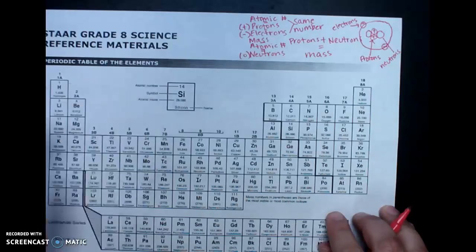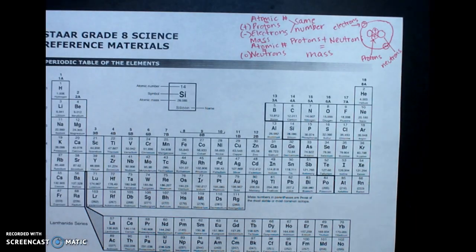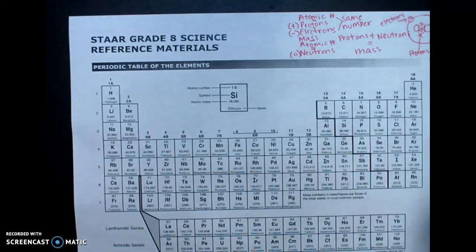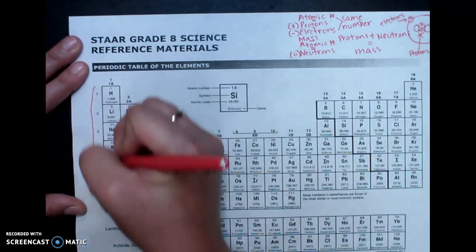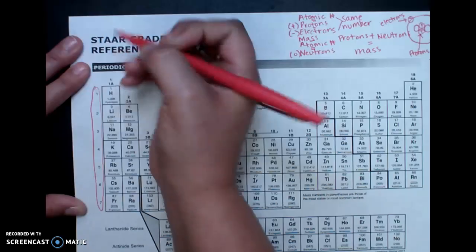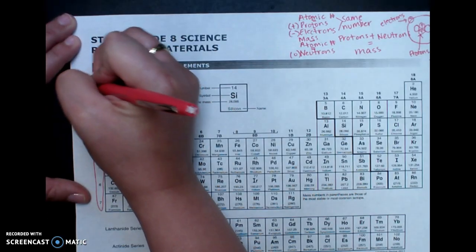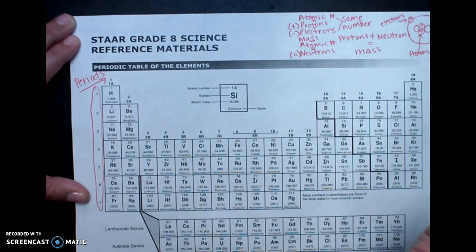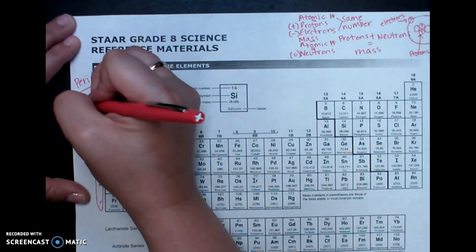Okay, moving on. Next we need to distinguish between periods and groups. So first we're going to talk about periods. So we're going to go over here to the left, and we need to remember that all of these over here, these seven, are periods. And periods go from left to right. Okay, they are rows. And what they also tell us is our energy levels.